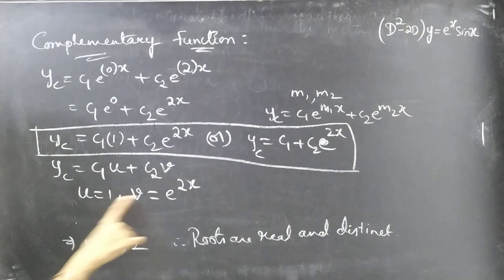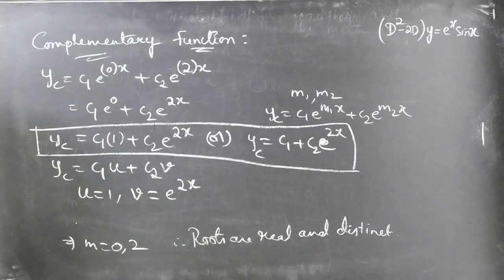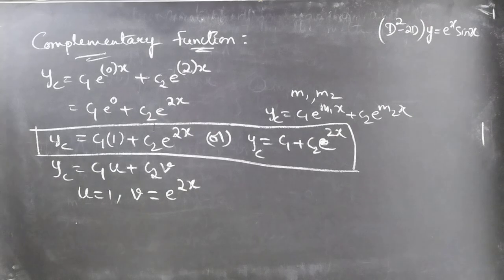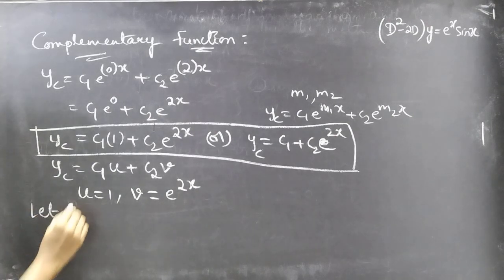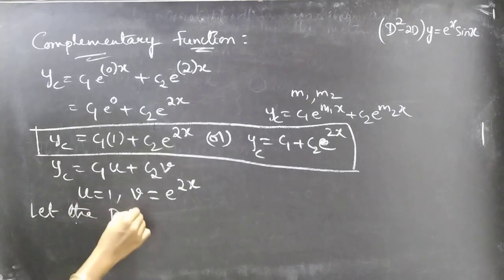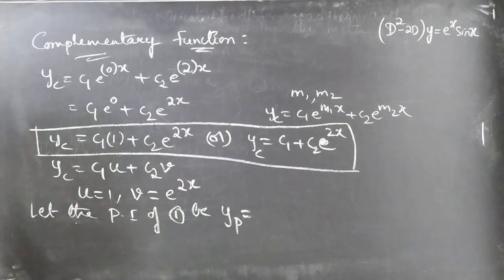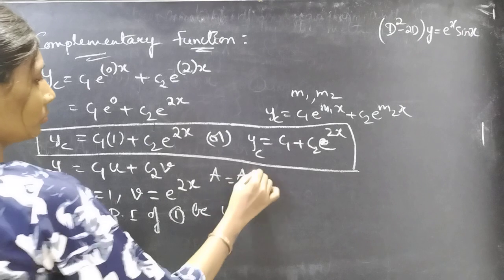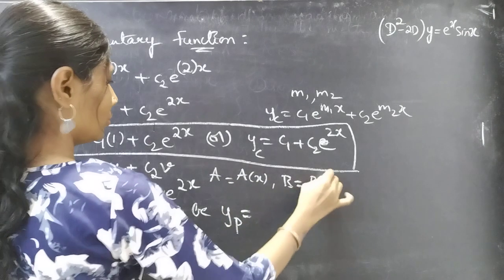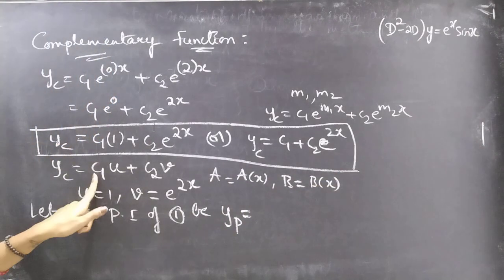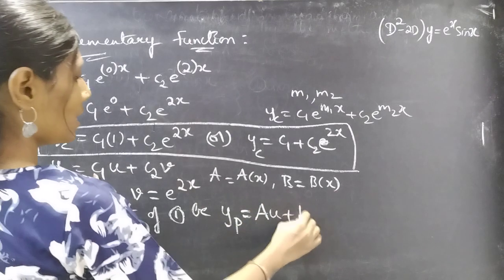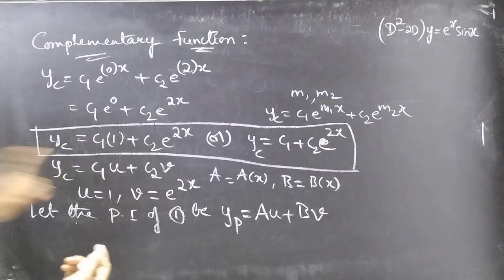From the complementary function we have u = 1 and v = e^(2x). Now we need to find the particular integral. Let yp be the particular integral, replacing c₁ and c₂ by a and b, which are functions of x.